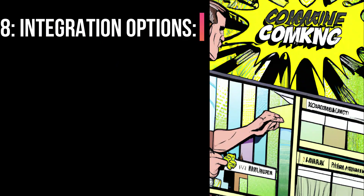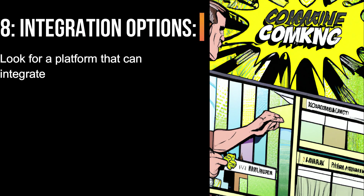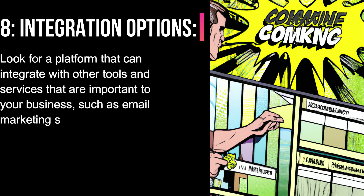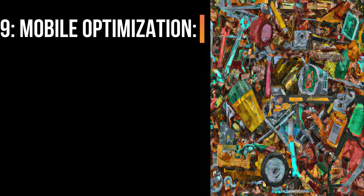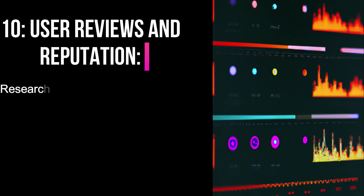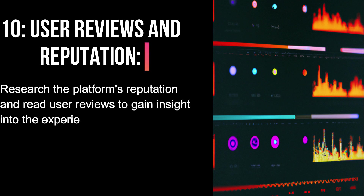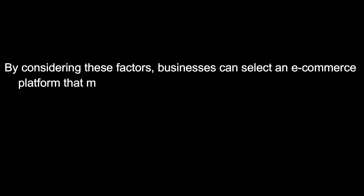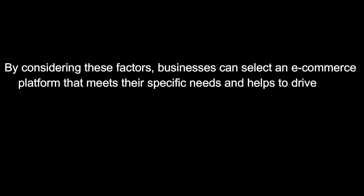8. Integration Options. Look for a platform that can integrate with other tools and services that are important to your business, such as email marketing software or analytics tools. 9. Mobile Optimization. Choose a platform that is optimized for mobile devices, with responsive design and mobile-specific features. 10. User Reviews and Reputation. Research the platform's reputation and read user reviews to gain insight into the experiences of other businesses. By considering these factors, businesses can select an e-commerce platform that meets their specific needs and helps to drive their online sales and growth.